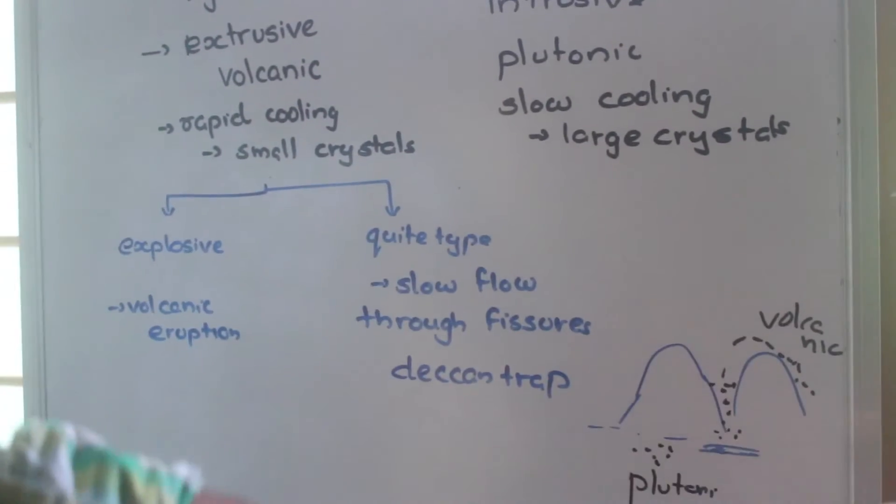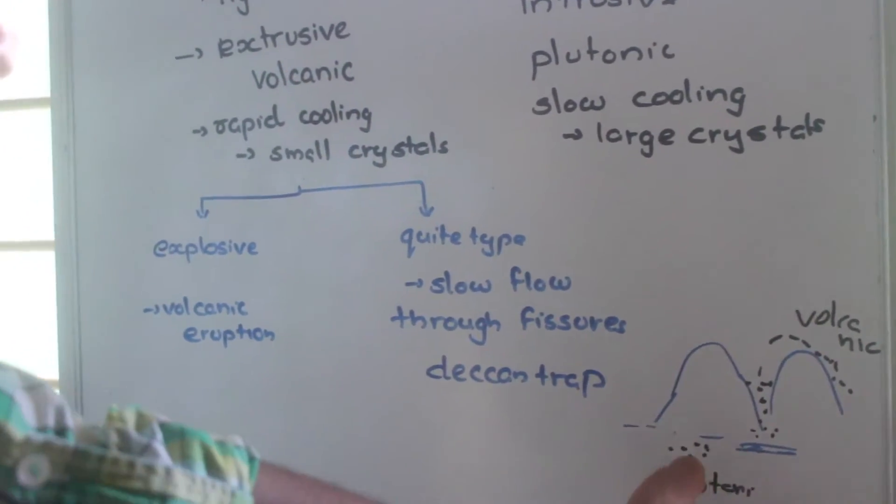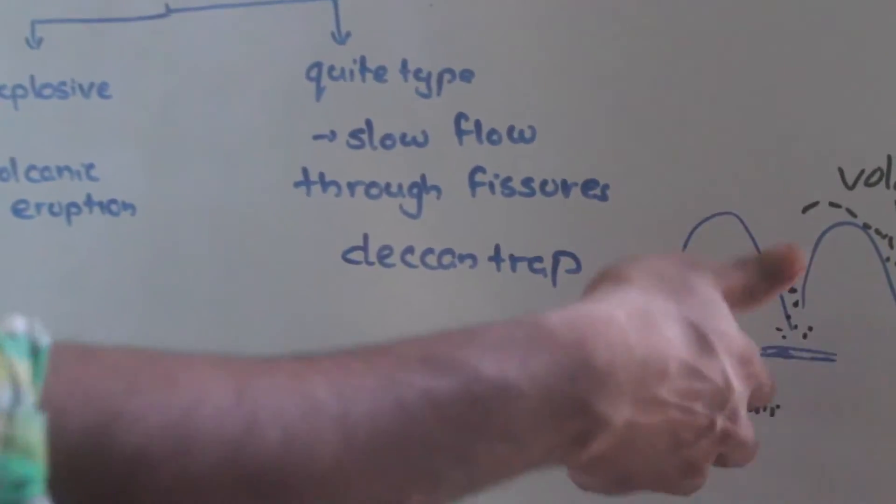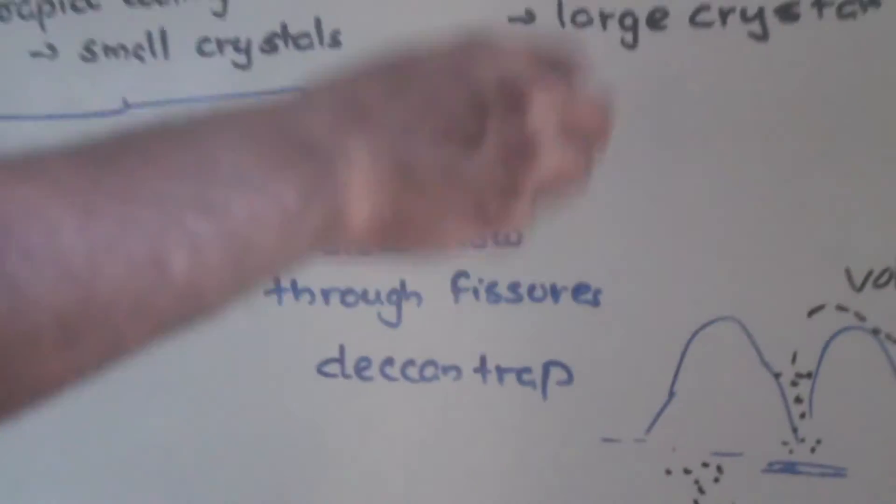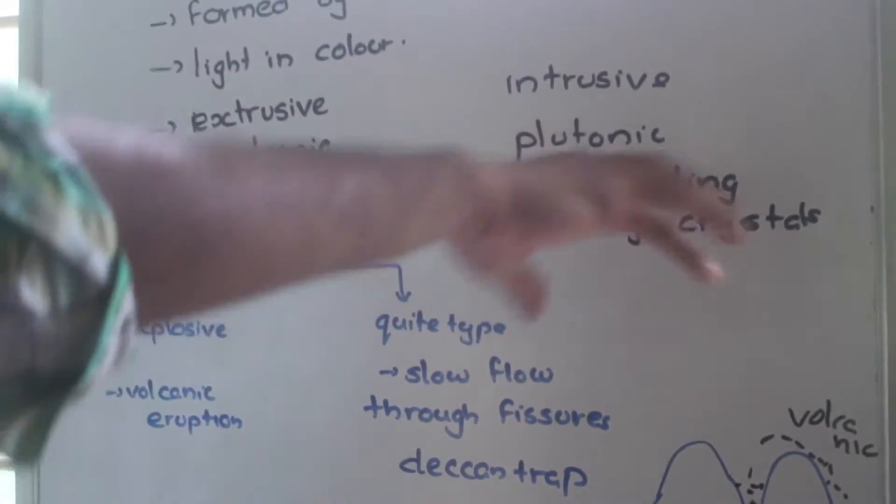If this solidification takes place inside the earth surface, in the interior of the earth, then we will call that intrusive rock, or it has another name, plutonic rock.